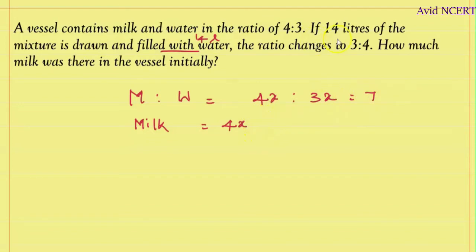So, 4x minus 14 liters of mixture drawn, that's minus 14 times 4/7, the part of the milk. 7 times 2 is 14, 2 times 4 is 8. So this equals 4x minus 8, that is the milk quantity.